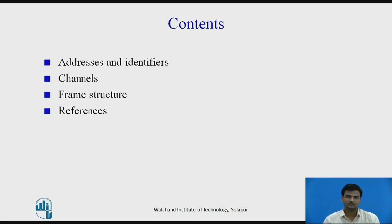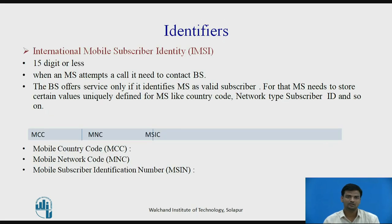These are the contents of this video lecture. GSM treats users and equipment in different ways. Phone numbers, subscribers, and equipment identifiers are some of the known ones. There are many other identifiers that have been well defined, which are required for subscriber mobility management and for addressing the remaining network elements.